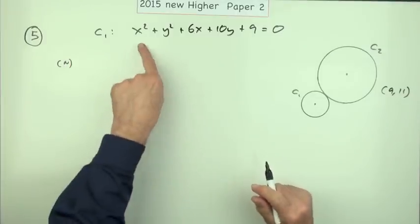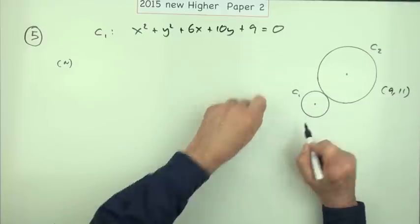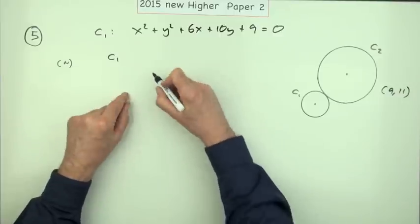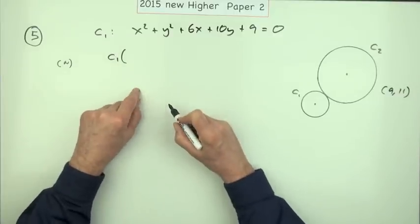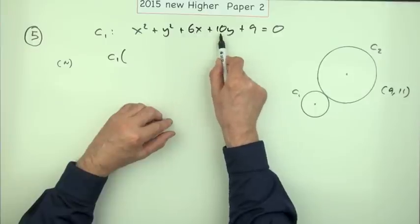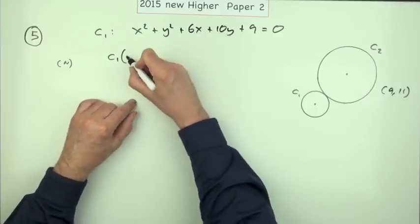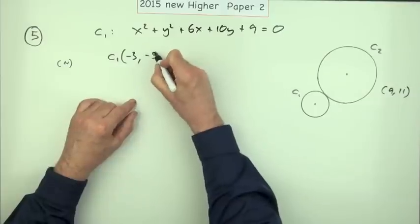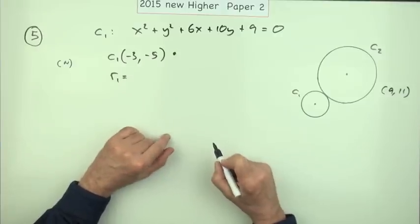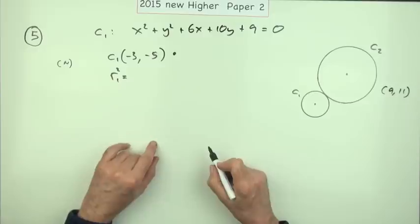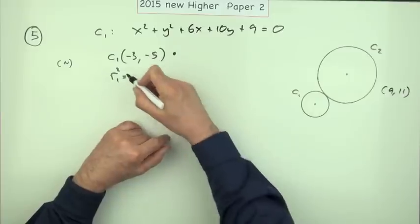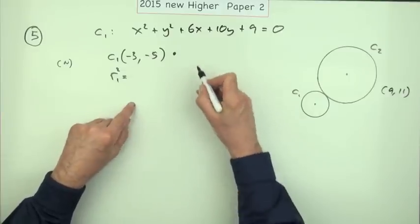The first thing would be to extract the information about that circle. What's the center? I'll just call the center c1 even though that's actually the name of the circle. There's only one mark for stating this, so I'll just go in with: it'll be the negative of half of those, so that'll be at negative three, negative five. That's a mark. And r1 for its radius, well the radius squared would be, although you may put the big square root down, I'll just do that and say the radius squared would be the center squared, so that's the negative three squared plus the negative five squared minus the number at the end.